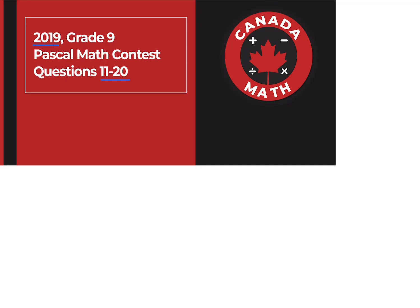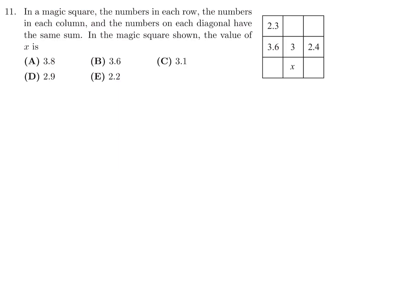Questions 11 through 20 on the 2019 grade 9 Pascal math contest. In a magic square, the numbers in each row, each column, and each diagonal have the same sum. In the magic square shown, the value of x is — first let's figure out that sum. The only row with all numbers adds up to 9, so every row, column, and diagonal must add up to 9. Let's call the unknowns Y and Z.